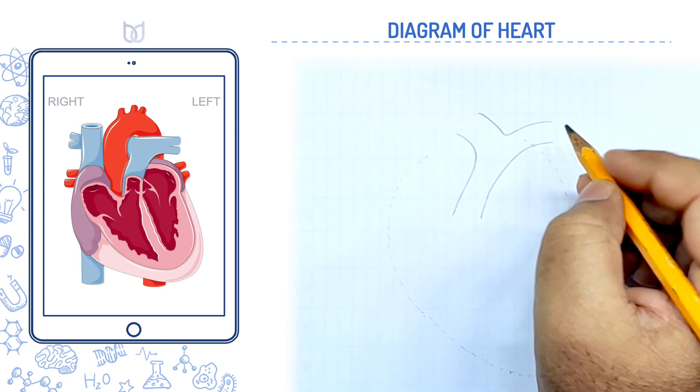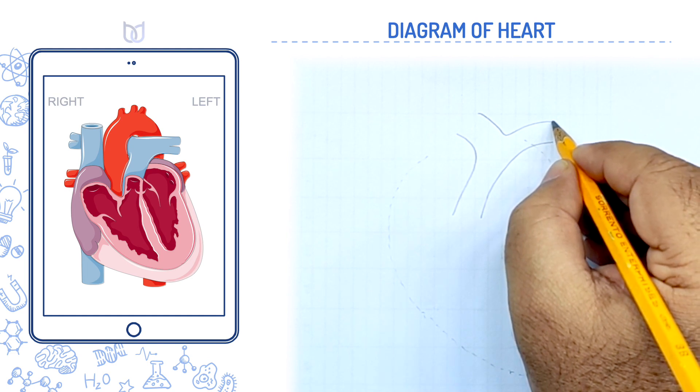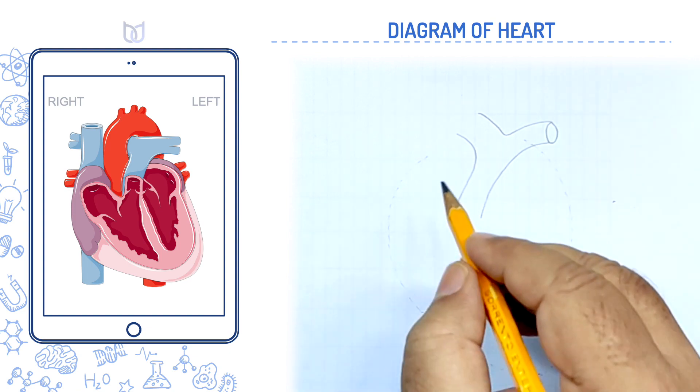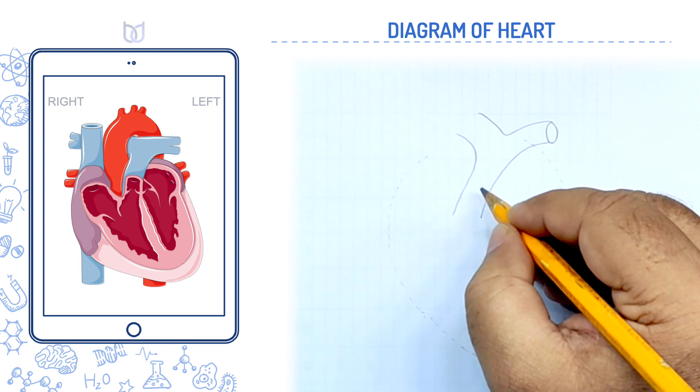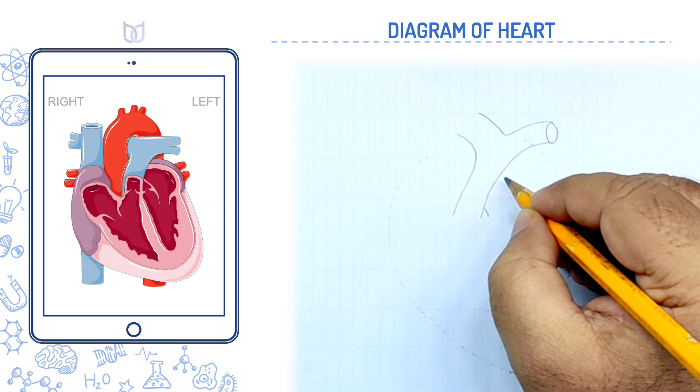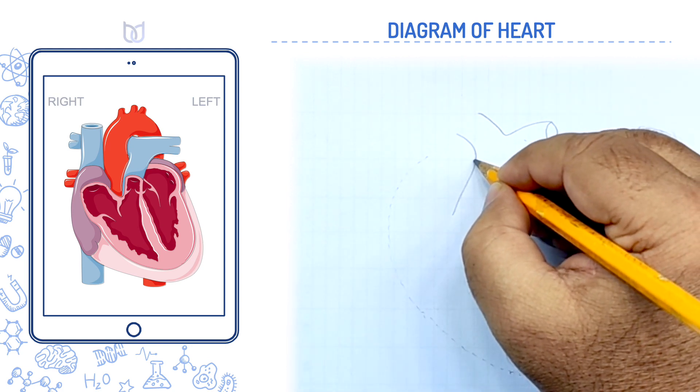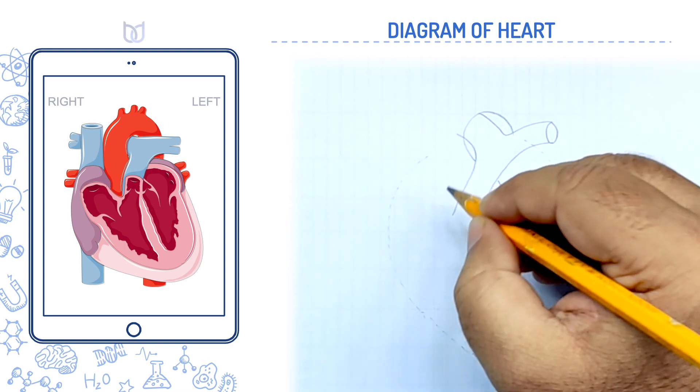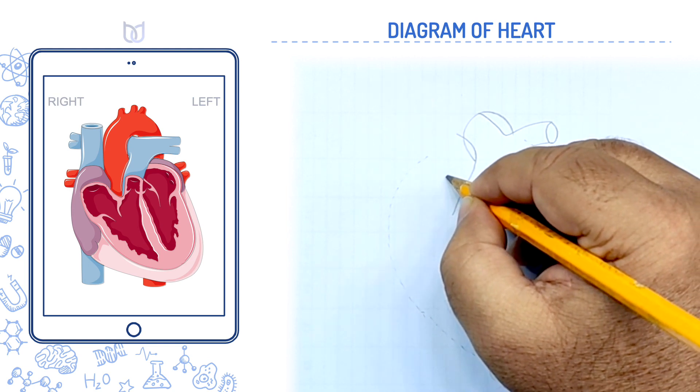So these are termed as right pulmonary aorta and left pulmonary to the left lung. Similarly, one another aorta should be shown here arising from left side. And these two just overlap one another.